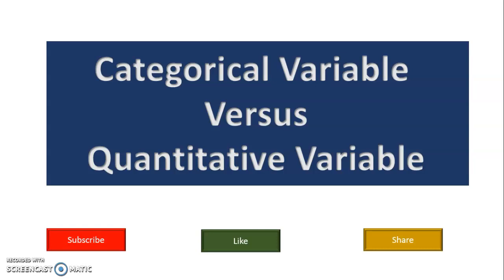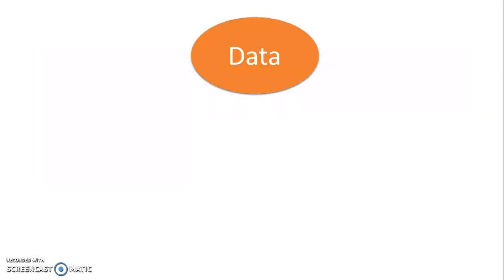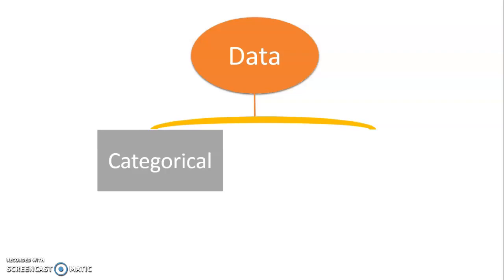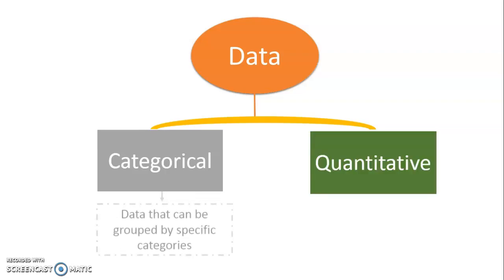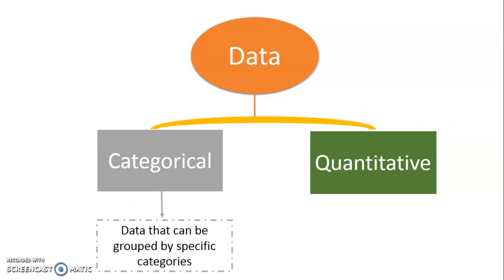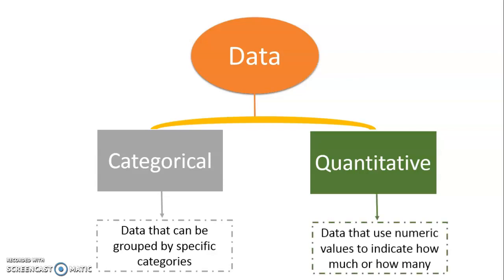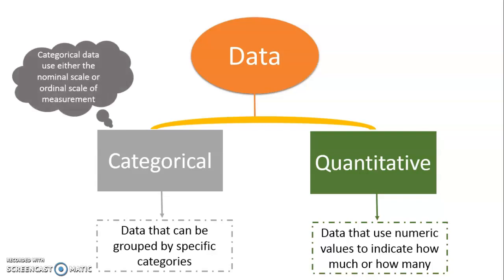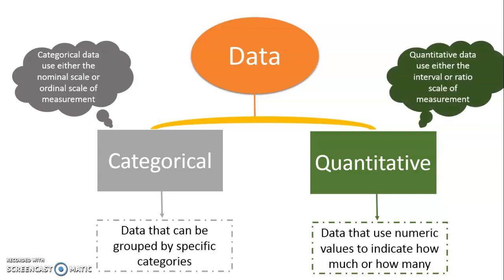Before moving ahead, we will understand about data. Data is classified into two types: categorical data and quantitative data. Categorical data is data which can be grouped by specific categories or classes, whereas quantitative data uses numeric values to indicate how much or how many observations there are. Categorical data uses either the nominal or ordinal scale of measurement, while quantitative data uses either the interval or ratio scale of measurement.